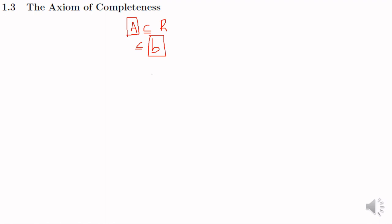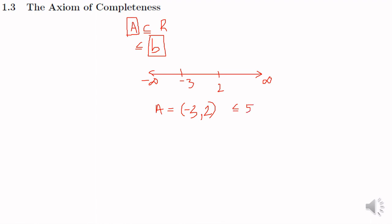For example, on the real number line from minus infinity to infinity, I take a subset A as the open interval (minus 3, 2). You can see that all the numbers in A are less than or equal to 5. So we say that A is bounded above and 5 is an upper bound of A.